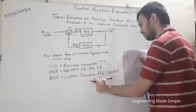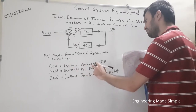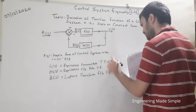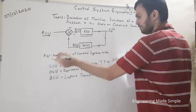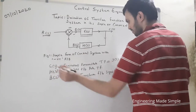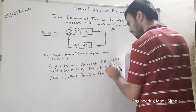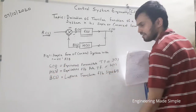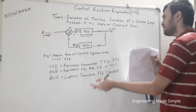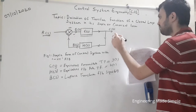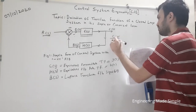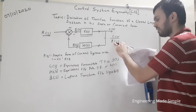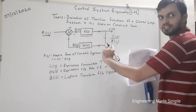B(s) is the Laplace transform of the feedback signal b(t). G(s) is the equivalent forward path transfer function — in time domain it would be g(t), and taking the Laplace transform gives G(s). Similarly, the feedback path transfer function in time domain is h(t), and taking the Laplace transform gives H(s). We work in the Laplace domain because we are finding the transfer function C(s)/R(s).